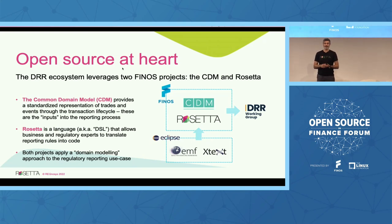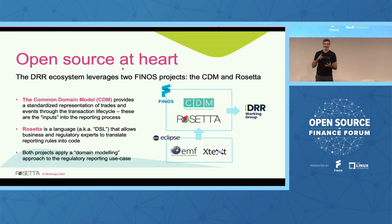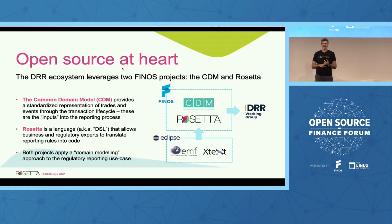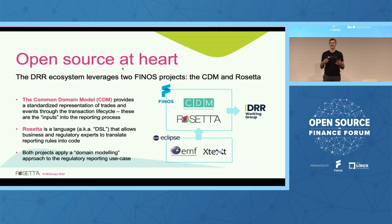The common domain model provides a standardized representation of trades and events through the transaction lifecycle. Those transaction data are effectively inputs into the reporting process. Rosetta is a language — also known as a DSL, domain-specific language — that effectively allows business and regulatory experts to translate reporting rules into executable code. Both projects, the CDM and Rosetta, apply a software engineering technique called domain modeling, applying that approach to the regulatory reporting domain.